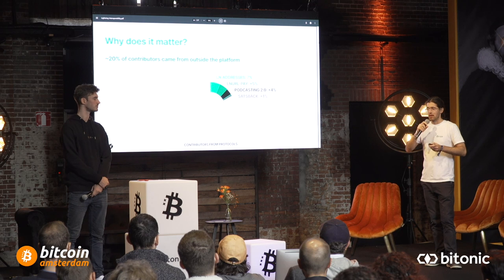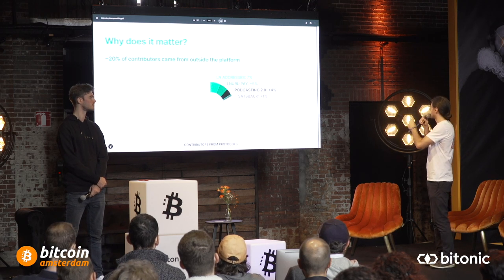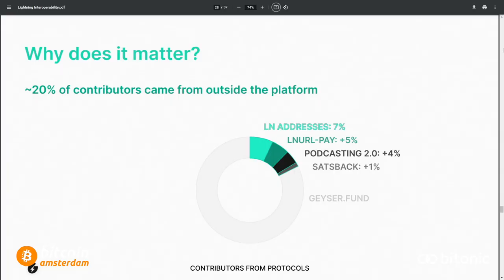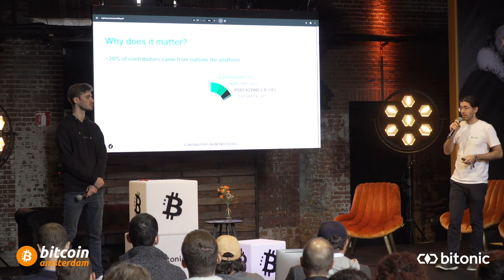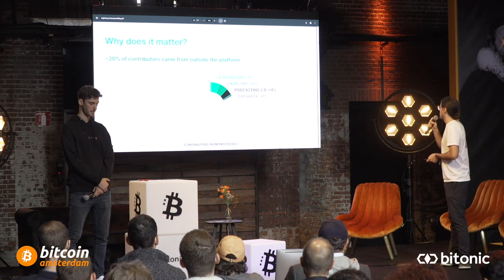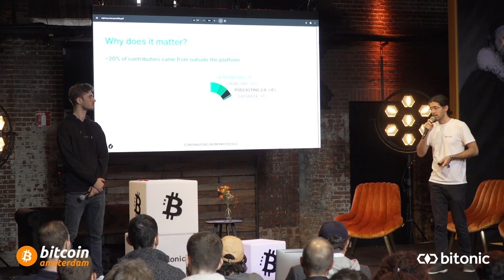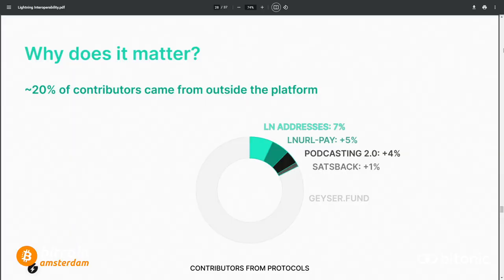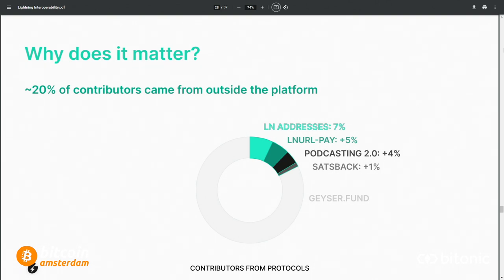To wrap all of this up: across all these protocols, 20% of all contributors and contributions on Geyser have come from outside the platform thanks to these protocol integrations. These are extra users who would not have existed without the integrations — 20% of users came from Podcasting 2.0, LNURL Pay, Lightning addresses, and WebLN combined. This really shows the power of interoperability and open monetary networks like Lightning.